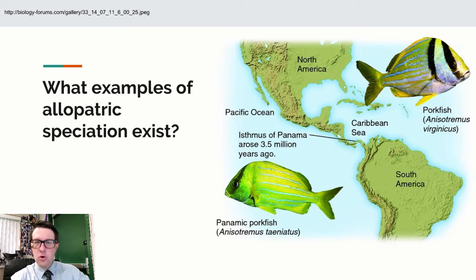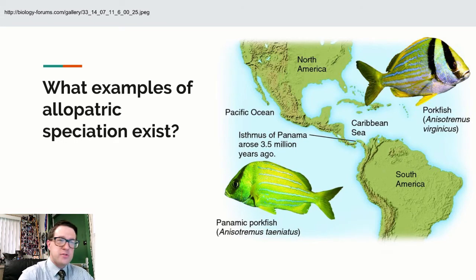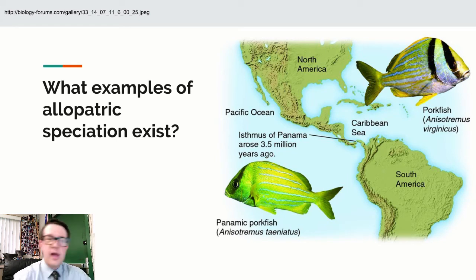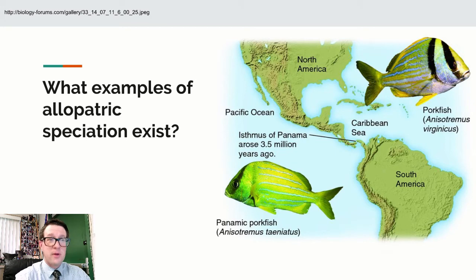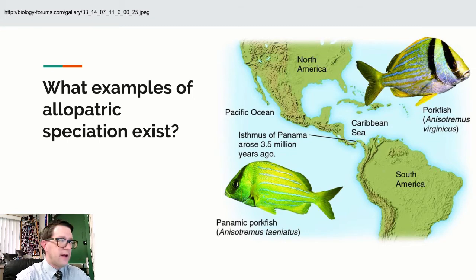Allopatric speciation happens all over the place. The easiest example: when the seas were higher, the Pacific Ocean and the Atlantic Ocean — or at least the Caribbean — were the same area, so Panama didn't exist. As the seas dropped, Panama formed and separated the Caribbean from the Pacific. That separation separated two types of pork fish, resulting in two different species. When speciation is due to a physical separation, we call that allopatric speciation.